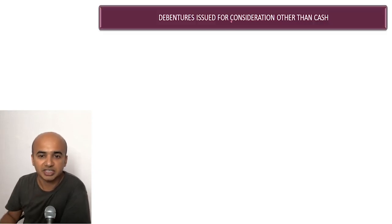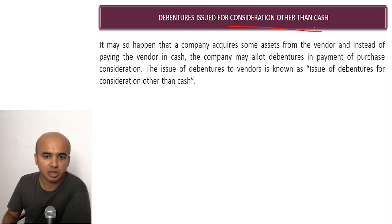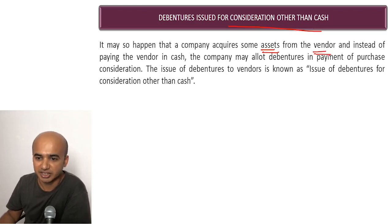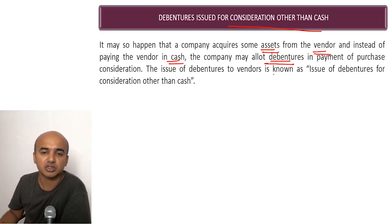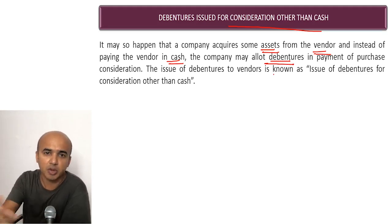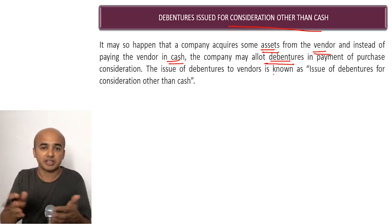Debentures issued for consideration other than cash means we are receiving something other than cash in return. For example, sometimes a company purchases assets from its vendors but instead of paying in cash the company allots them debentures, because the company may not have sufficient cash at the moment. The issue of debentures to vendors is known as issue of debentures for consideration other than cash — because you would have purchased machinery or fixed assets and instead of cash you are allotting them debentures.